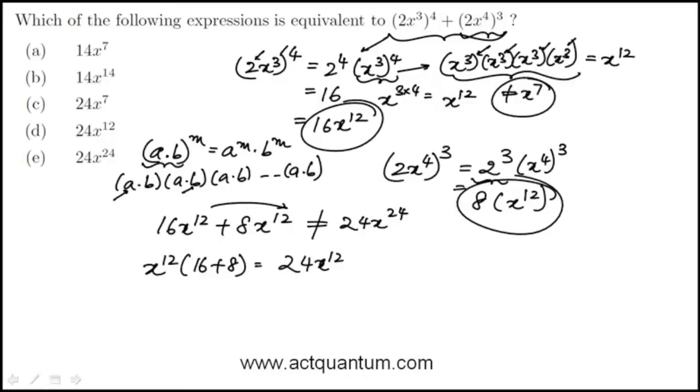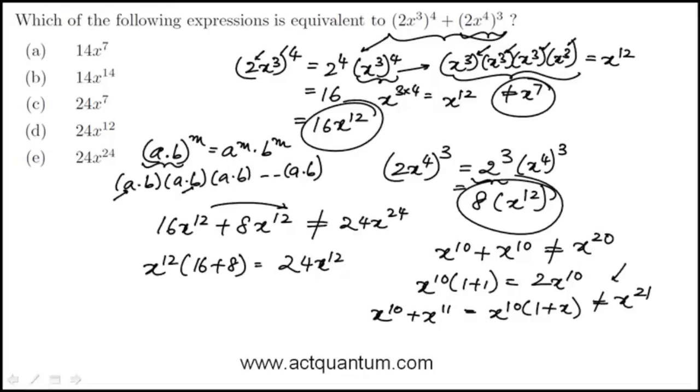I think a common temptation for these types of exponent problems is, if you're given x to the 10 plus x to the 10, that's not x to the 20. Instead, think of factoring x to the 10. In this case, this would be just 2 times x to the 10. Or another example is x to the 10 plus x to the 11. It's best to handle it by factoring x to the 10. And you can't really just add this and say this is equal to x to the 21. So watch out for those temptations.